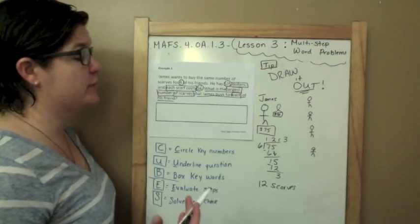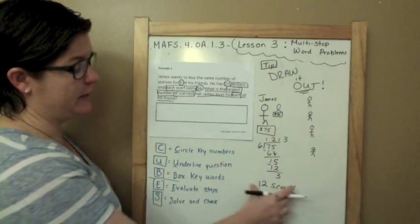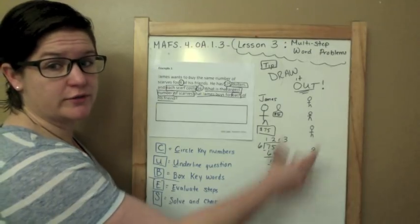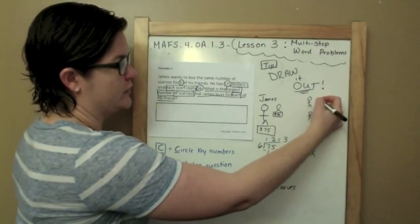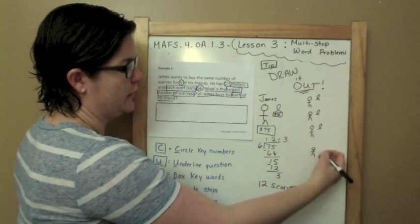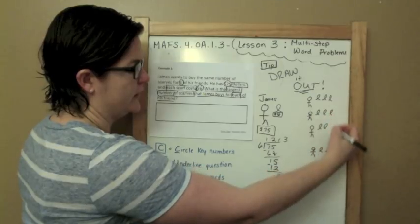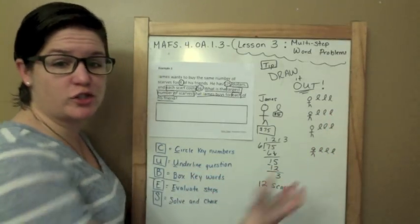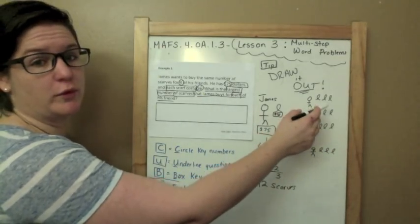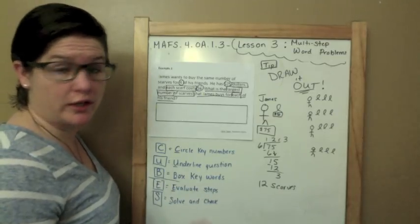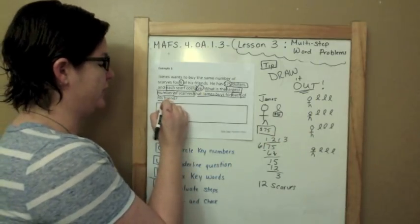He can buy 12 scarves. Now he needs to go back to our question: what is the largest number of scarves that James buys for each friend? Well, he has 12 scarves that he can buy total, and now we need to distribute those 12 scarves to his 4 friends. So one scarves for you, two, three, four, five, six, seven, eight, nine, ten, eleven, twelve. I just distributed the 12 scarves that he bought to each friend. What's the largest number? The largest number would be 3. Could he have given them each 2? Sure. Could he have given them each 1? Sure. But it says the largest number. The largest number that he could possibly give them would be 3 scarves.